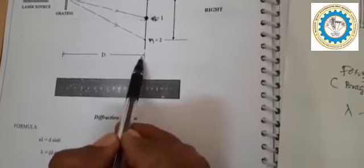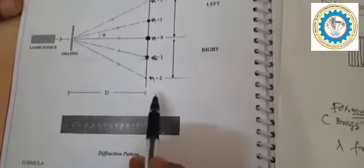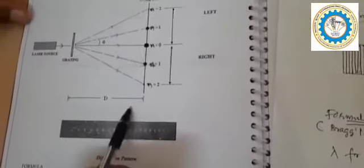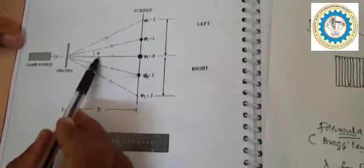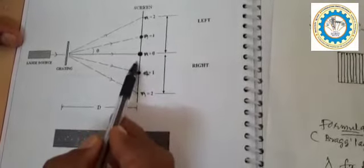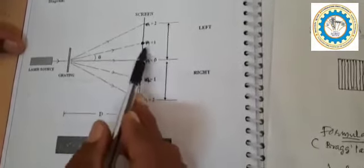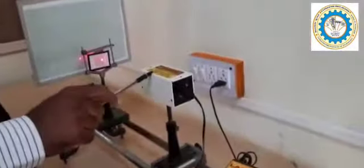Capital D is the distance between the diffraction grating and the screen. When we change this distance, theta changes. When theta changes, the distance from the center to n1 and from center to n2 also changes. By varying the capital D value, these distances vary.